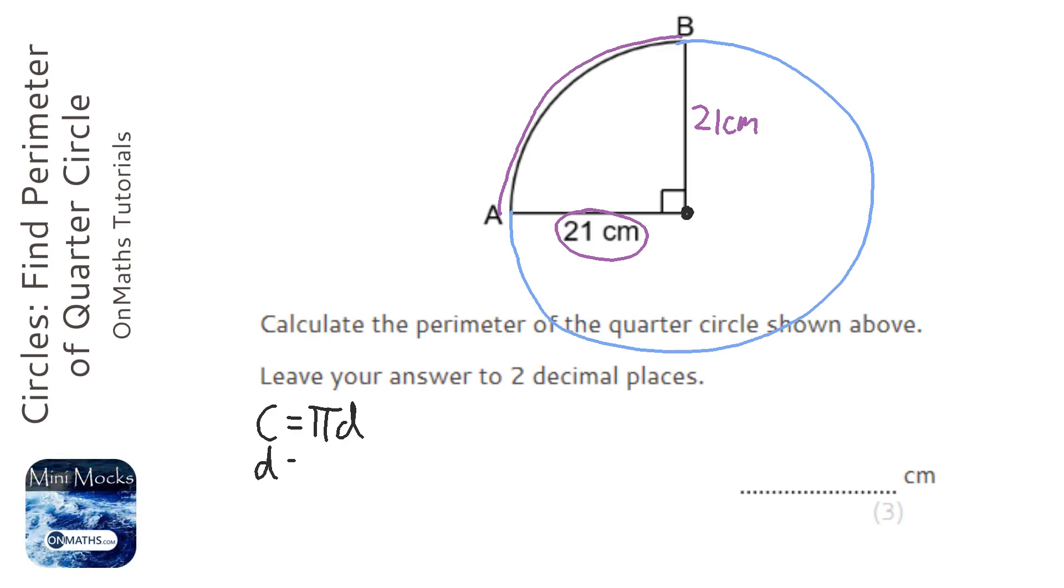So, first of all, we need to work out the diameter, which is 2 times the radius, which is 2 times 21, so the diameter is going to be 42.